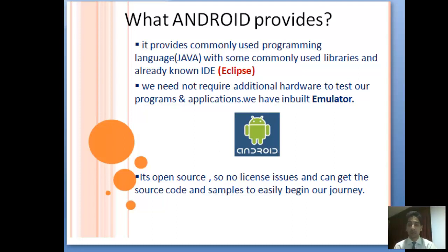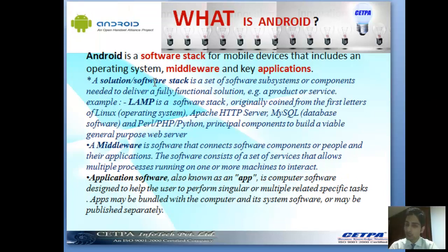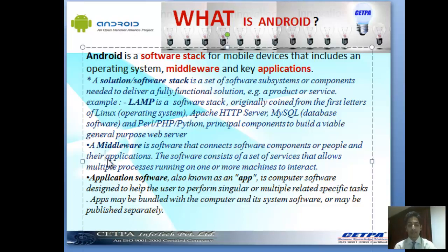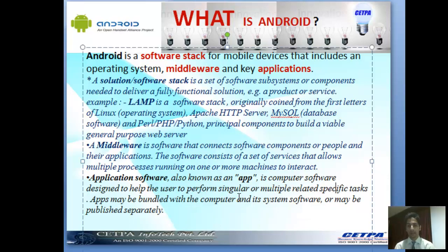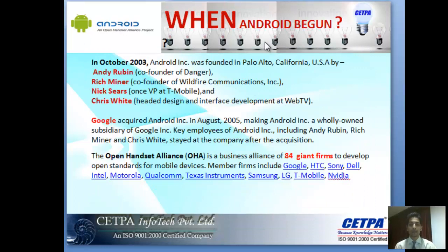Android is a software stack for mobile devices that includes an operating system, middleware, and key applications. A software stack is a set of software subsystems needed to deliver a fully functional solution — for example, LAMP stands for Linux, Apache Server, MySQL, and PHP. Middleware connects software components, and applications are software designed to help users perform tasks like alarm or camera apps.